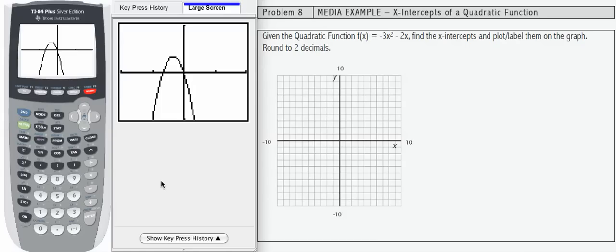That makes our graph look a lot different. When we're looking for our x-intercepts, we're looking for this point right here and this point right here. We want the ordered pairs where the graph crosses the x-axis.